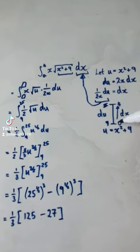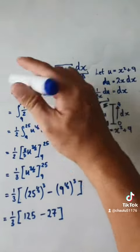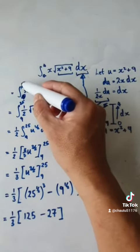So in the dx world, we are integrating from 0 to 4. In the du world, we are integrating from 9 to 25. So this thing here would be 9 to 25.